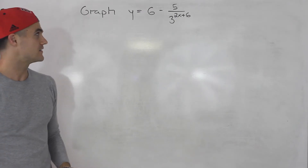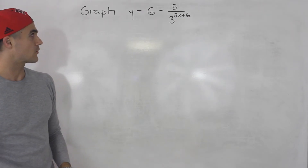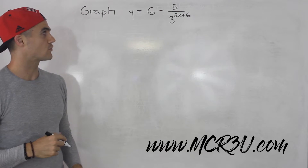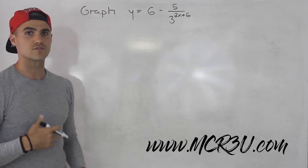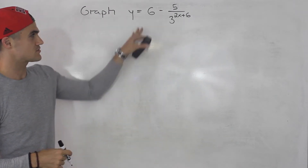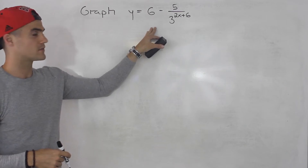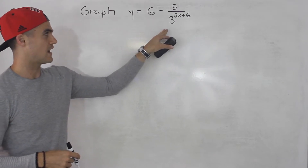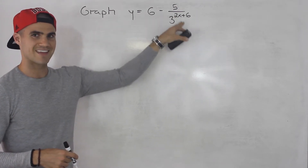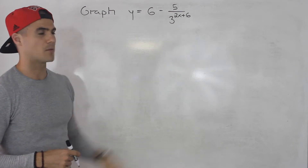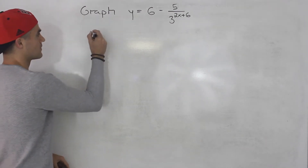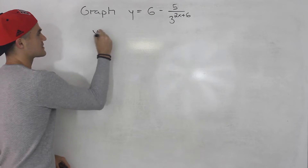Welcome back. In this video we're going to graph the function y equals 6 minus 5 over 3 to the power of 2x plus 6. This is a weird-looking function — we have an exponent in the denominator, which is something we haven't dealt with before.